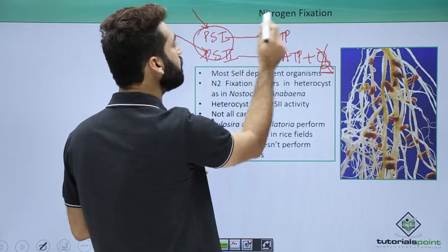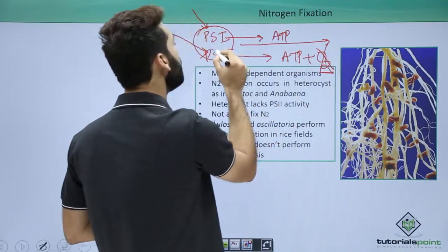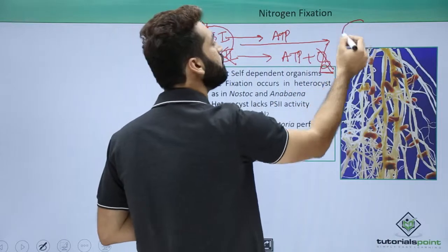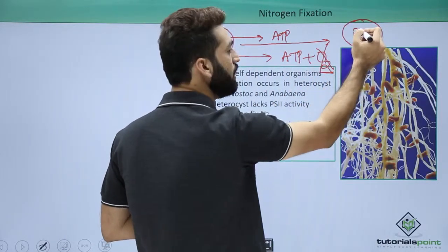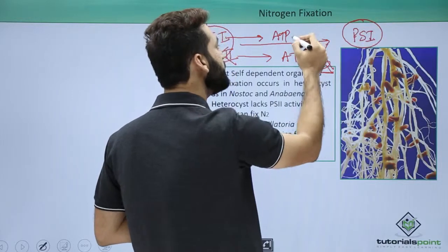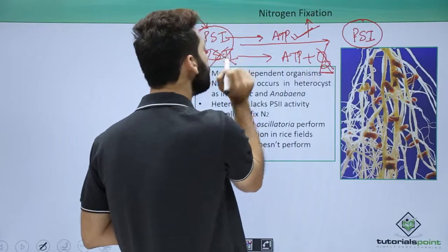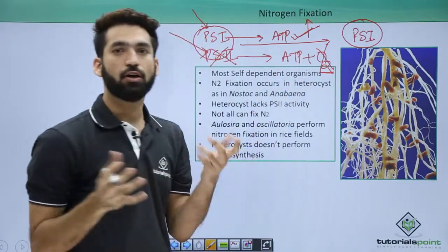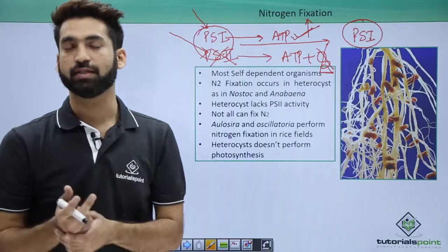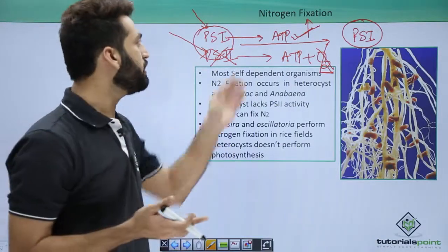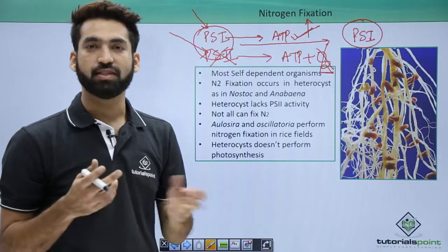For nitrogen fixation, the vegetative cell changes itself by removing PS2 and retaining only PS1. PS1 alone is sufficient to provide ATP for nitrogen fixation. Since PS2 is not present, oxygen will not evolve, and without oxygen, nitrogenase will function and convert nitrogen into usable products.